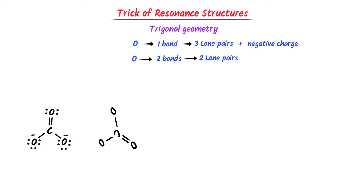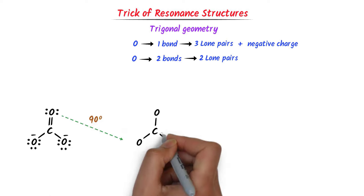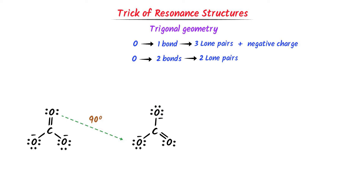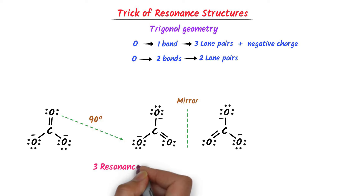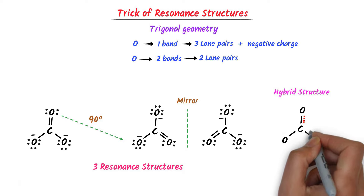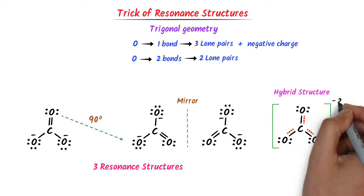When I rotate this structure 90 degrees clockwise, this oxygen comes here. I get this second structure. Secondly, I place a mirror in front of this structure. After reflection, I get the third structure. So, these are the three resonance structures of carbonate ion. For its hybrid structure, we know that a double bond is present at each oxygen position. We also know that the net charge on carbonate ion is negative 2.